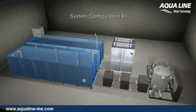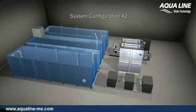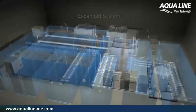The compact design of the package system has a small footprint. The building block approach allows the equipment layout to be configured to fit buildings of various sizes and shapes. The system can be easily expanded by adding pre-fabricated assembly units to the existing treatment operation with minimal interruption.